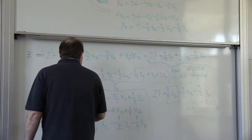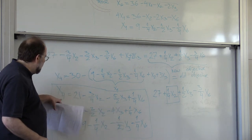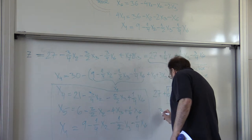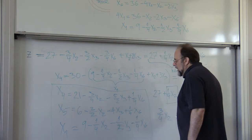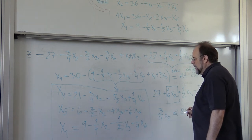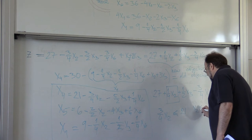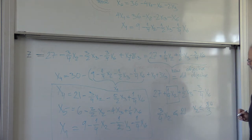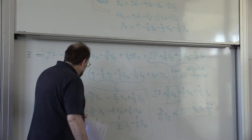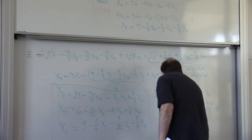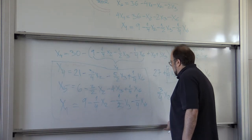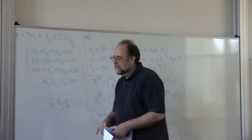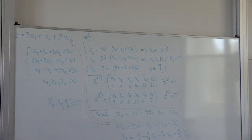How much can I increase x2 without violating positivity of x4? Well, 3 quarters of x2 has to be smaller or equal than 21, which means that x2 has to be smaller than 84 divided by 3. How much can I increase x2 without violating these constraints?